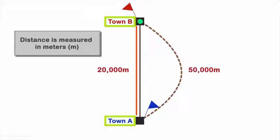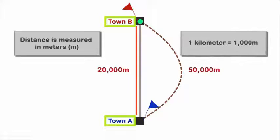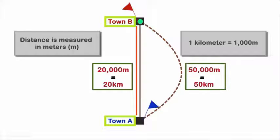Okay, so nobody likes big numbers unless it's your salary. So we should also know that a kilometer is 1000 meters. In our example, we can say that instead of 20 kilometers, you traveled 50 kilometers.